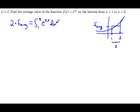So the work involved here requires me to find the antiderivative of e to the 2x, evaluate at the two endpoints. That finds the area, and then I will solve for f average in this equation by dividing that 2 over.